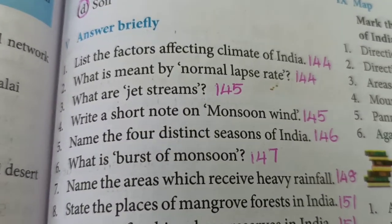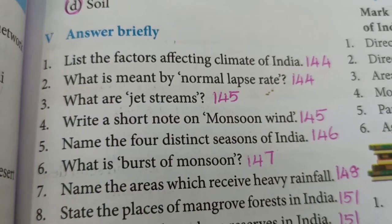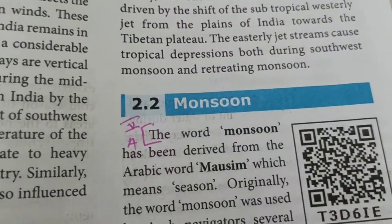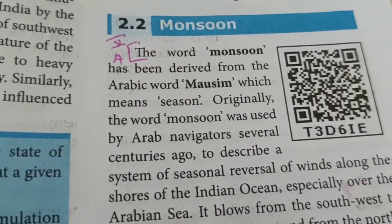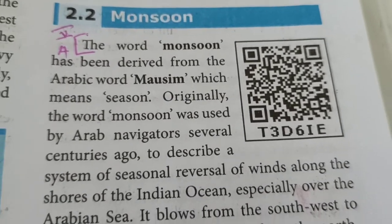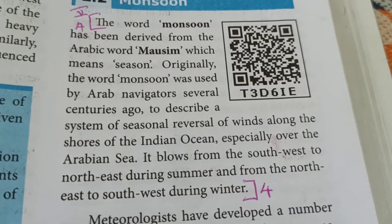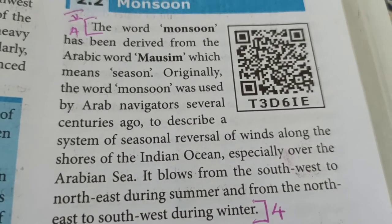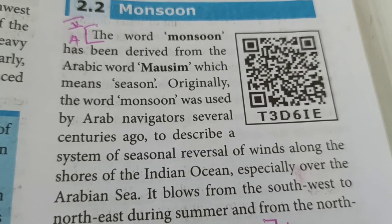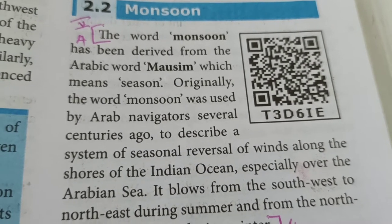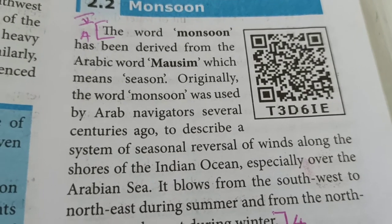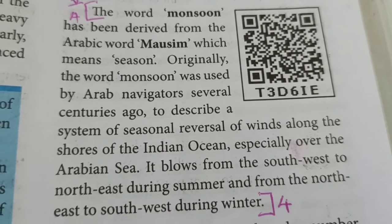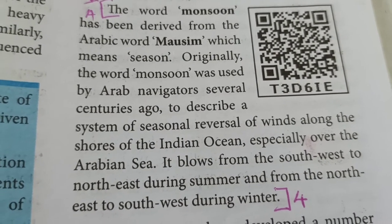Next question: Write a short note on monsoon winds. Again, on the same page 145, under the side heading 'Monsoon.' A very important point to remember here is the Arabic word 'moosim' which means season, and the Arab navigators who used this word for referring to the seasonal winds which blow in the Arabian Sea.